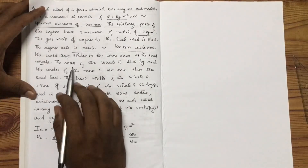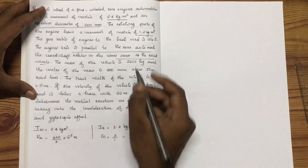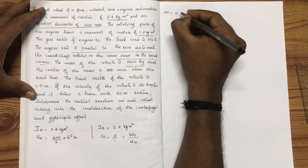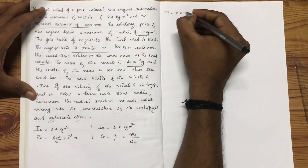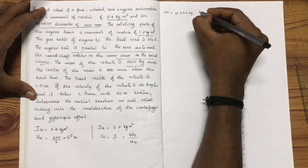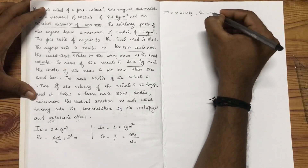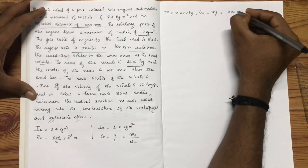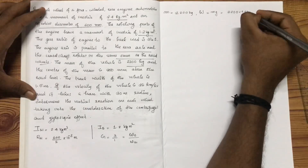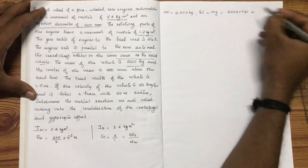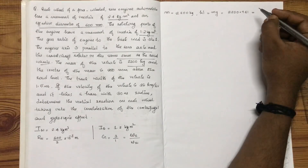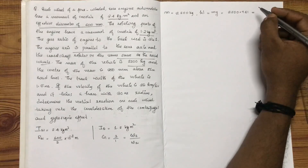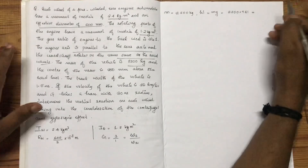The mass of the vehicle M is equal to 2200 kg. We can find capital W, the weight of the vehicle, which is equal to M into g — 2200 into 9.81 — which gives us the weight value.